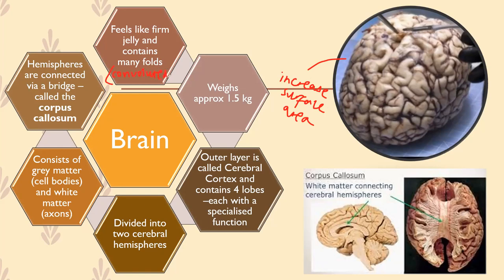We call that a convoluted structure. The brain weighs about one and a half kilos — this is the fully formed brain. Obviously when you're first born the brain is not going to be that big, but as you get older and your head gets bigger, your brain grows and develops as well to accommodate the increasing size of the skull.